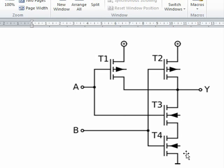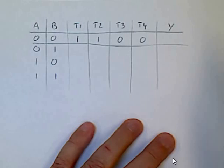In the case where T1 is conductive, and either T3 and T4 is not conducting, then the output is going to be connected to positive, and we're going to call that logic one. So the output is going to be one.